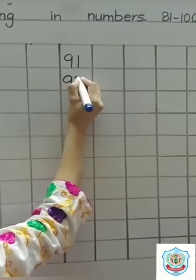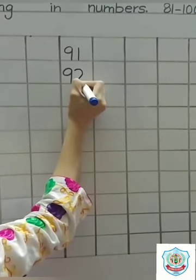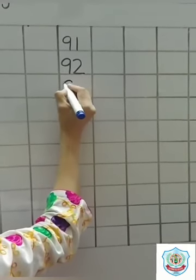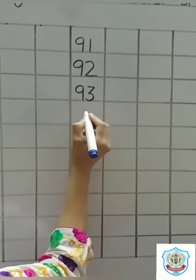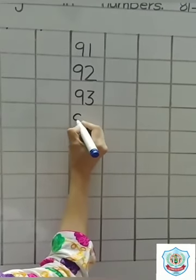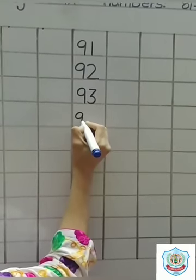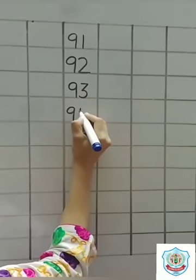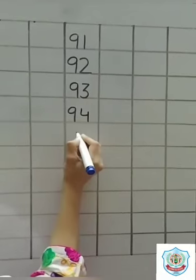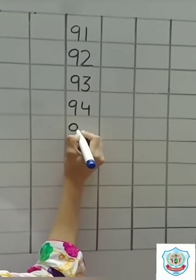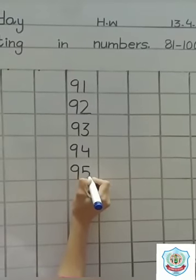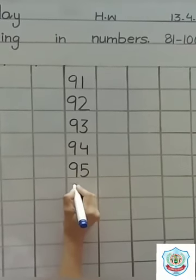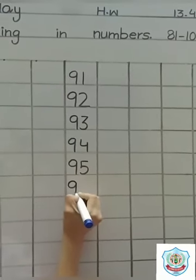87 to 90. Now start next line. 91, 92, 93, 94, 95.